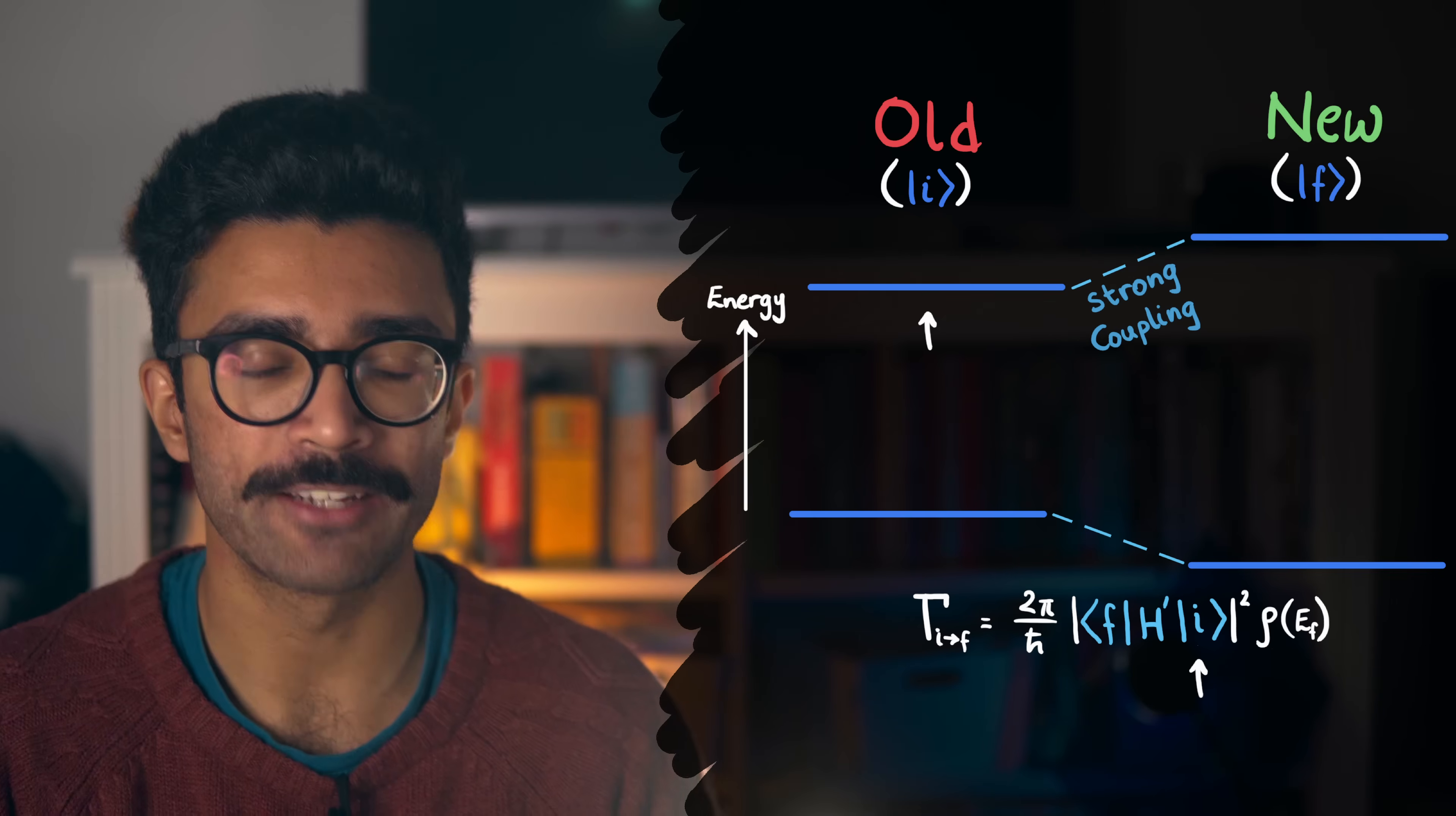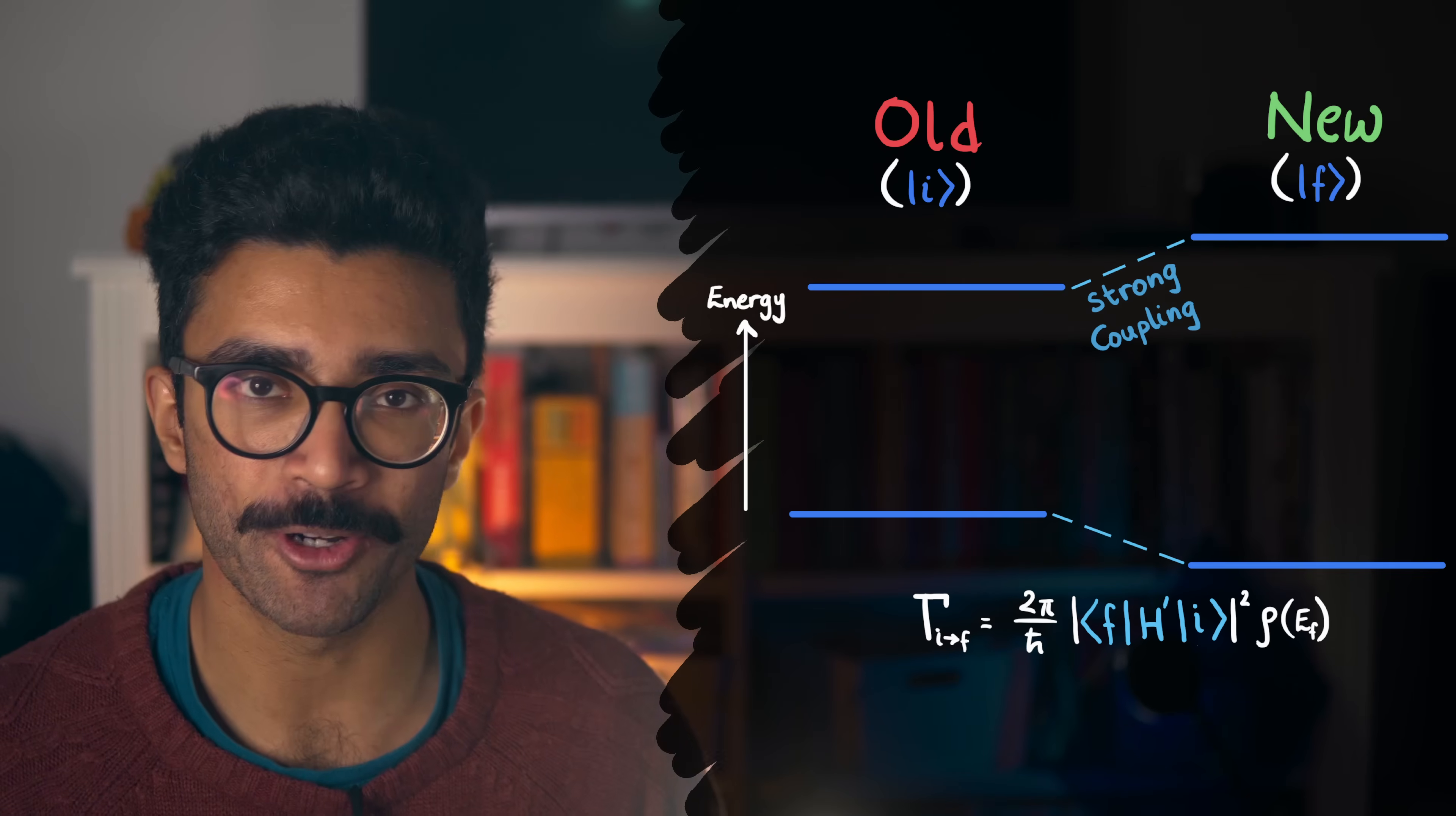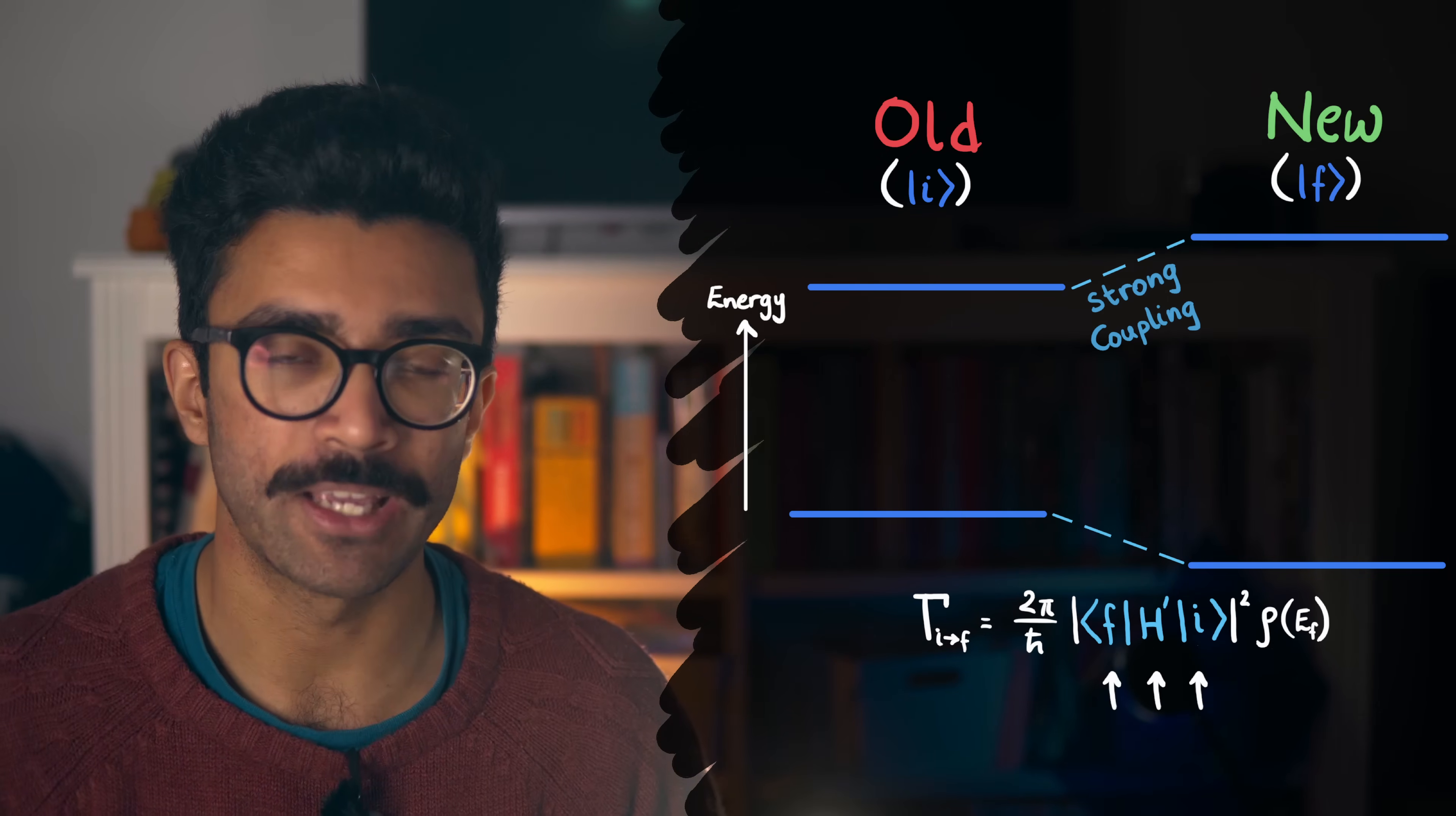For each pair of initial and final allowed states, we can calculate how strongly coupled they are in relation to the modifying Hamiltonian. We won't go into the mathematical details here, but let me know if you'd like to see a video on that in the future. But this term basically considers how the small change that we've now added to the Hamiltonian links together the old state that the electron was in, and one of the new possible states it could go into.